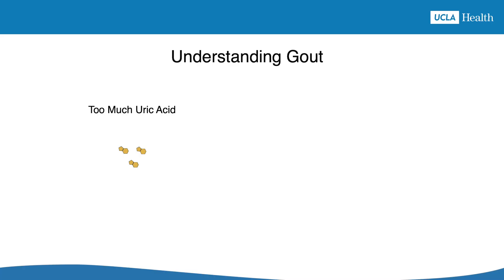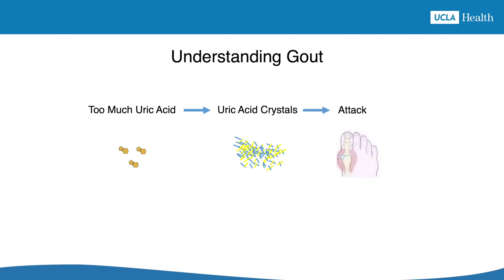Gout happens when there's too much uric acid in your body — so much that it starts forming uric acid crystals in and around your joints. The crystals cause gout attacks and other problems, like damage to the joints and gout lumps called tophi. Without uric acid crystals, there is no gout or any other problems caused by gout.